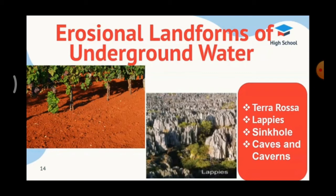Terra rosa is called 'red soil' in Italian. Deposition of red clay soil on the earth's surface is due to the dissolution of limestone content in rocks. The redness of the soil is due to the presence of iron oxide.